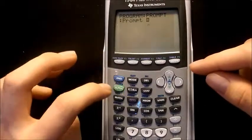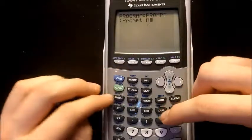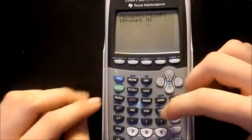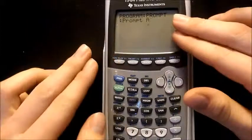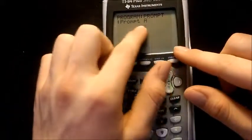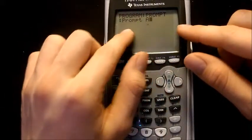Alright, so I hit second, math, and that little alpha A up there. So that is there. Now it's going to prompt the user for variable A.